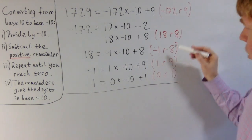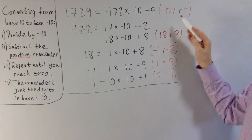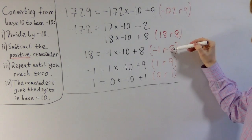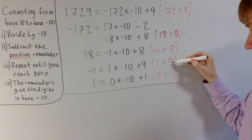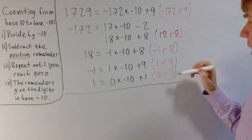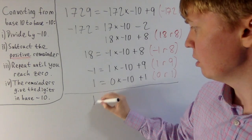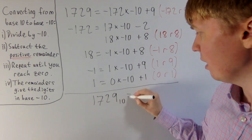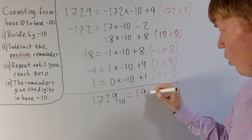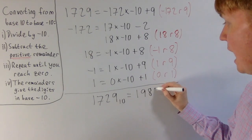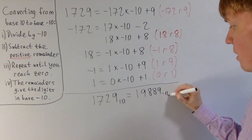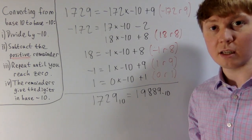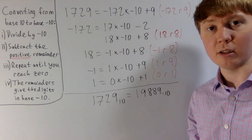So what does this actually tell us? This tells us that our digits are going to be: 9 ones, 8 lots of minus 10, 8 lots of 100, 9 lots of minus 1,000, and 1 lot of 10,000. So this is telling us that 1,729 in base 10 is actually the same as 1 9 8 8 9 in base minus 10. So if you ever see the number 19889 on a taxi, now you can appreciate its significance.